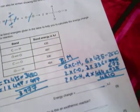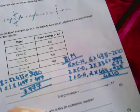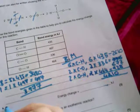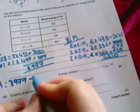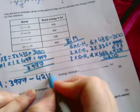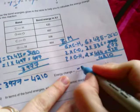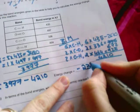So I need to work out delta H. That's going to be 3977 minus 4210. And that gives me minus 233 kilojoules per mole.